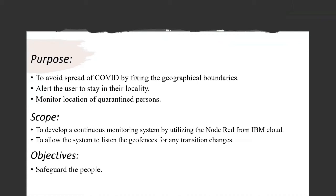Coming to the scope of the project, the main aim is to develop a continuous real-time monitoring system by utilizing the Node-RED from IBM Cloud Services. If it detects any change in position, we can send a notification or alert to the user's mobile saying that they should not enter — this is a red zone area — or if staying in a red zone and crossing it, it will alert: you should not cross the red zone area, you must be safe.